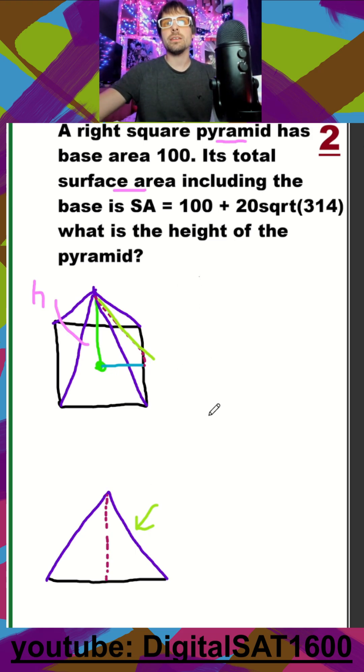So how we do that is, since we know this base is 10 by 10, because our total base area is 100 and it's a square, well, this line right here is just going to be 5, right?